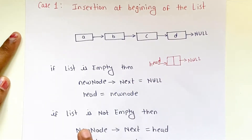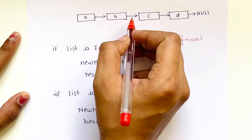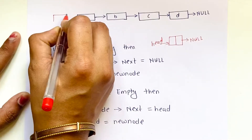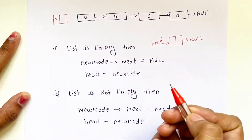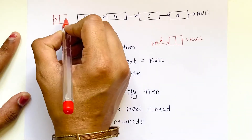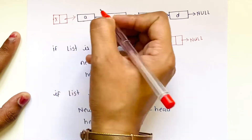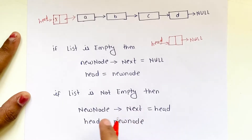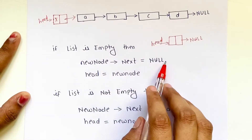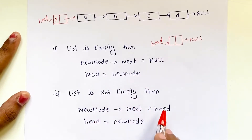The second condition is if the list is not empty. Suppose this linked list already has four nodes and you want to insert a new node x at the beginning. If the list is not empty, the next field of this new node points to the head of the existing list, and the new node becomes the head. So: if the list is empty, new_node.next = null and head = new_node; if not empty, new_node.next = head and head = new_node.